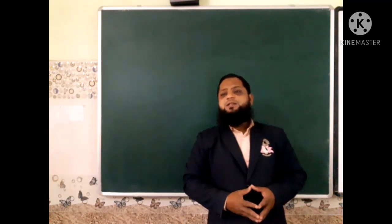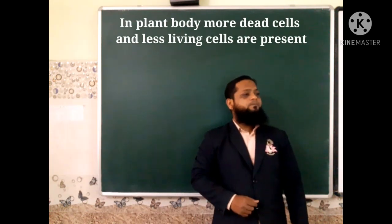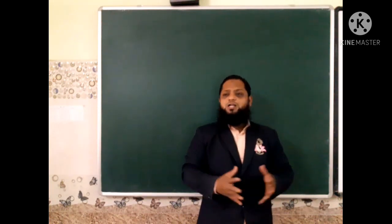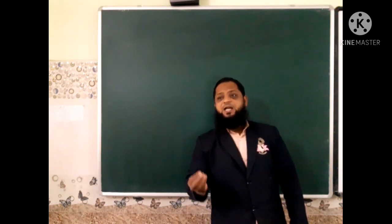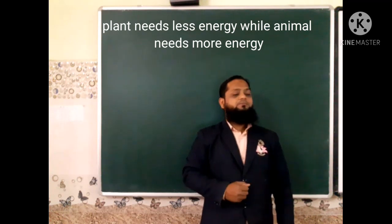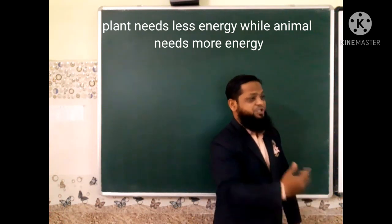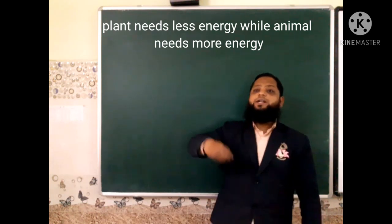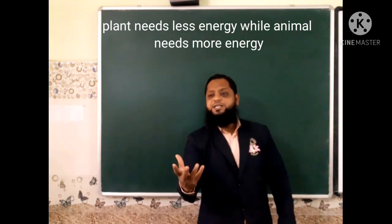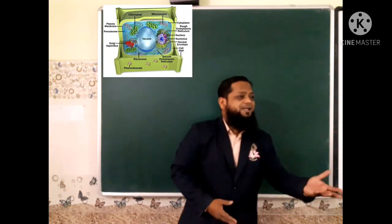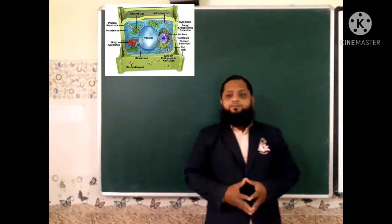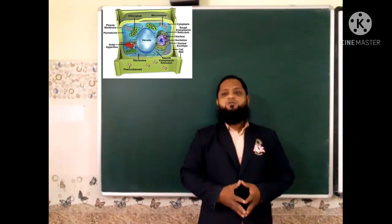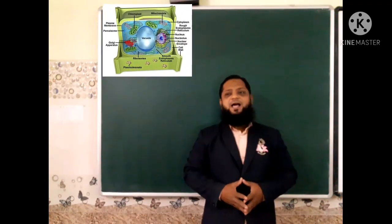In the plant body, a greater number of dead cells are present, while in the animal body, fewer dead cells are present. We can say that plants need less energy for their work — for photosynthesis and transpiration — due to the presence of more dead cells and fewer living cells. Animals need more energy because of more living cells and fewer dead cells. This is the comparison between plant and animal cells.